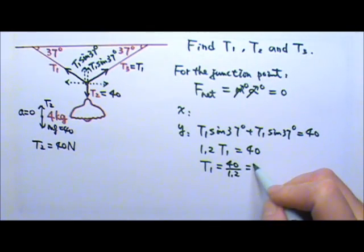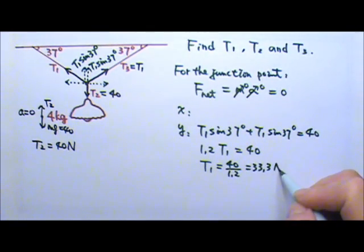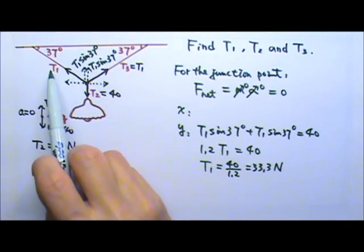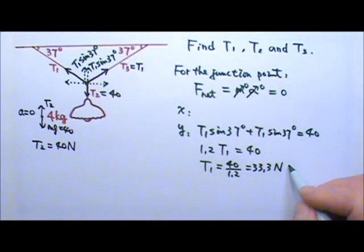This gives us 33.3 newtons. So T1 and T3 are both 33.3 newtons, and T2 is 40 newtons.